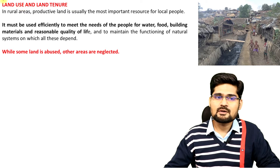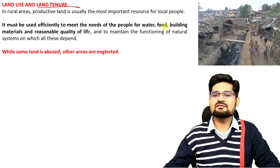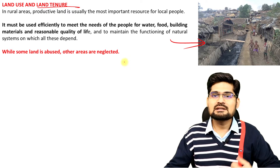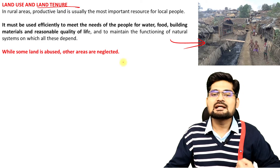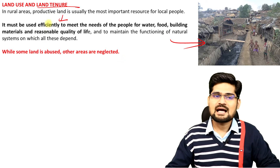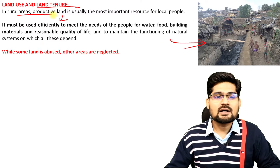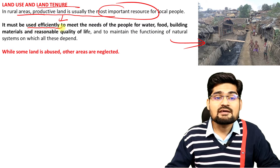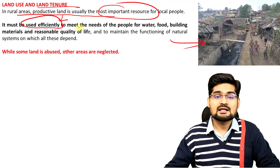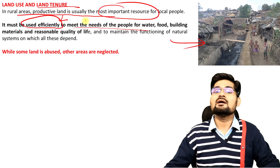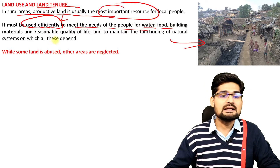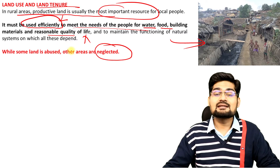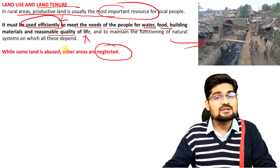Another problem is land use and land tenure. The land use system is getting changed day by day — the indigenous variety of land uses is changing to new varieties. In rural areas, productive land is usually the most important resource for people, but it must be used efficiently, which is not happening. It is not able to meet the needs of growing people — the need for food, water, building materials, and quality of life. Land use transformation is creating a lot of problems across the world.